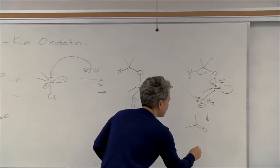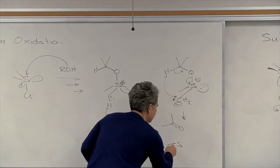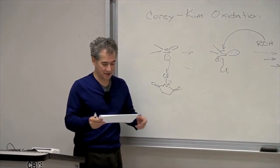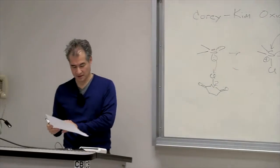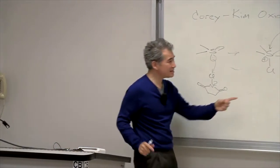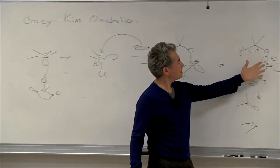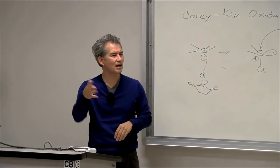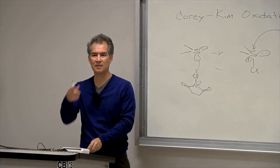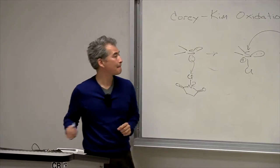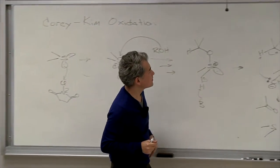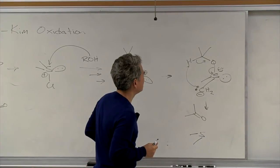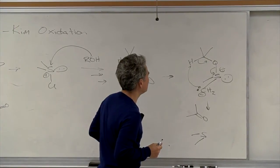Okay, this is the Corey-Kim oxidation. It's a key step. It may not be obvious, but that last step is a pericyclic reaction called a retrogene reaction. That's the next thing we're going to talk about in this class — pericyclic reactions.